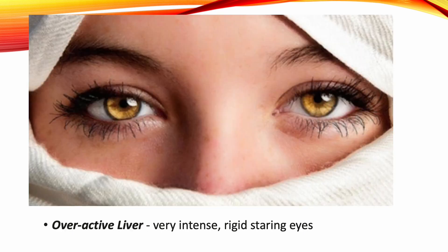An overactive liver can result in a person having very intense, rigid staring eyes. They stare at you and instinctively you want to look away from them because their gaze is too intense and piercing. In this case, the hun is overactive. It is very focused on a goal, or its own individual vision of the future. This type of person is used to being in control and getting their own way.